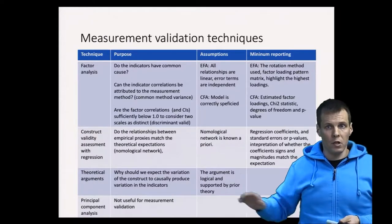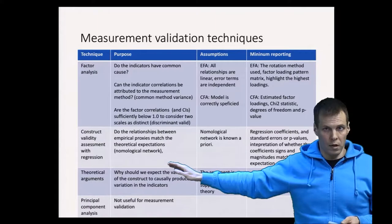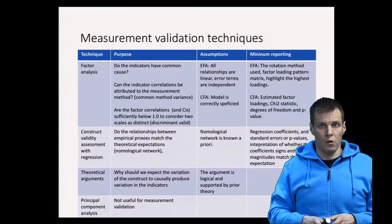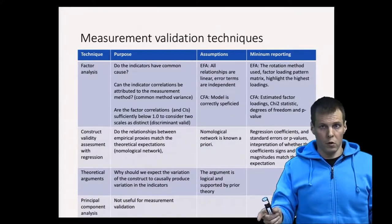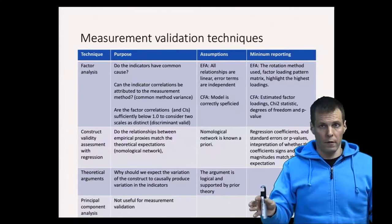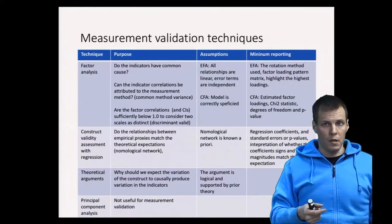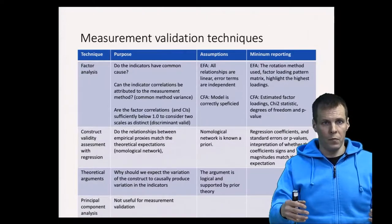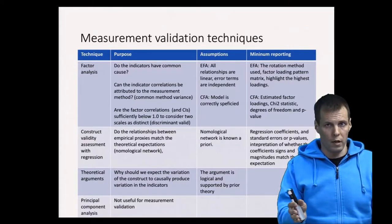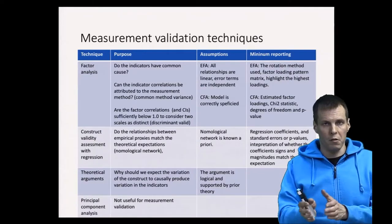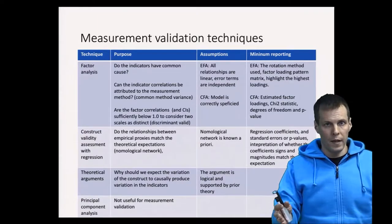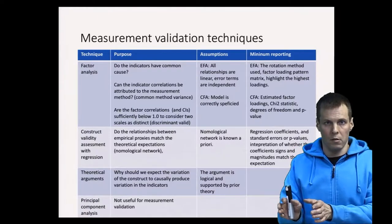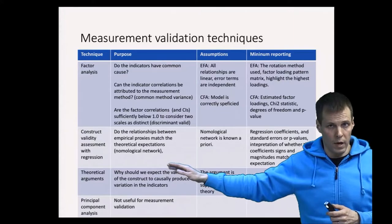The second technique is construct validity assessment using regression analysis or correlations. The idea is that you have different measures that could correlate and are supposed to measure different things. You have a theoretical expectation of how the constructs that those indicators measure should behave — this is called the nomological network. You then compare whether your empirical relationships between the measures match the theoretical expectations. If they do, you conclude that you may have construct validity.